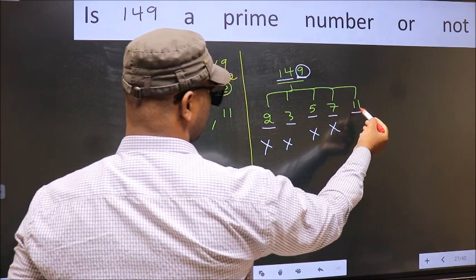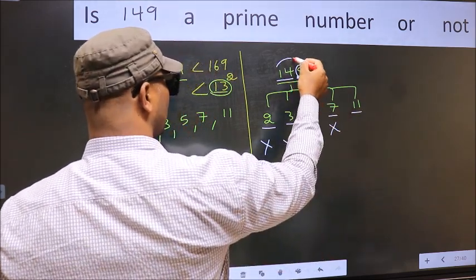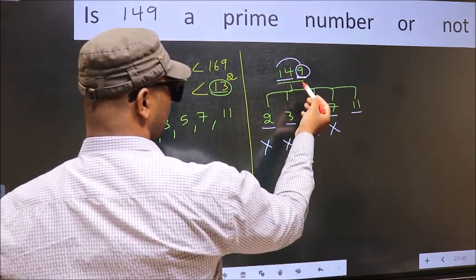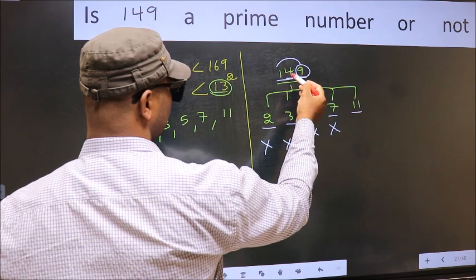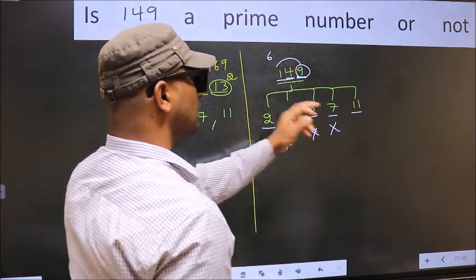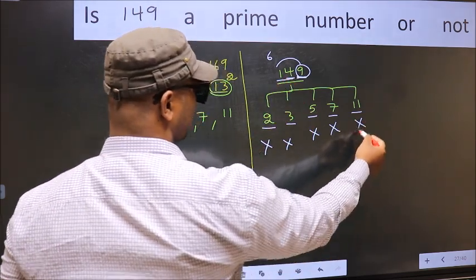Next number 11. To check divisibility by 11, add alternate digits: 1 plus 9 equals 10. Subtract the middle digit: 10 minus 4 equals 6. 6 is not divisible by 11, so this number is not divisible by 11.